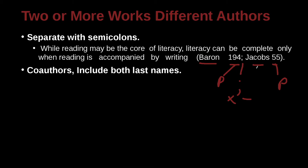Co-authors include both last names. So in this case, we have two authors on the same paper — Doris and Edric. That's two. Remember, if we have three or more, we're going to use 'et al.' And that number after is your page number.